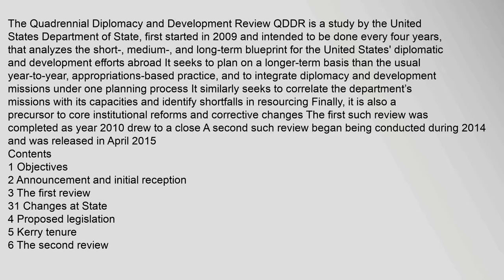The Quadrennial Diplomacy and Development Review (QDDR) is a study by the United States Department of State, first started in 2009 and intended to be done every four years, that analyzes the short, medium, and long-term blueprint for the United States' diplomatic and development efforts abroad. It seeks to plan on a longer-term basis than the usual year-to-year, appropriations-based practice, and to integrate diplomacy and development missions under one planning process. It similarly seeks to correlate the department's missions with its capacities and identify shortfalls in resourcing. Finally, it is also a precursor to core institutional reforms and corrective changes.